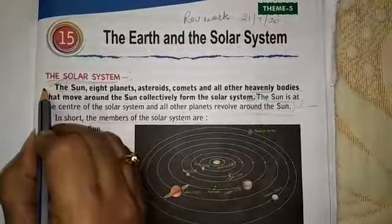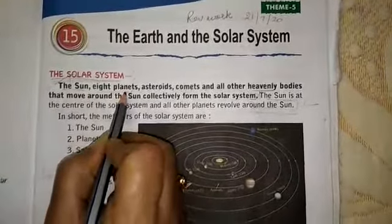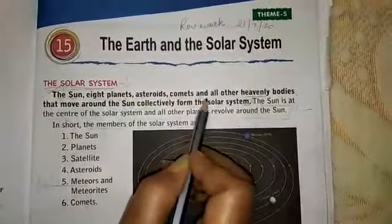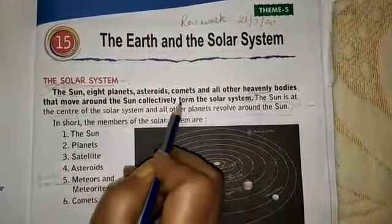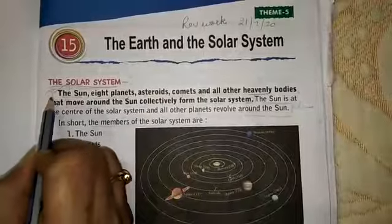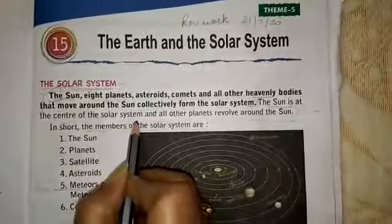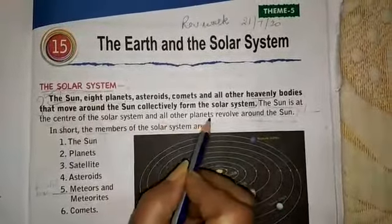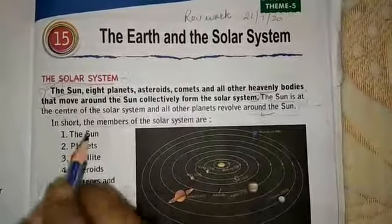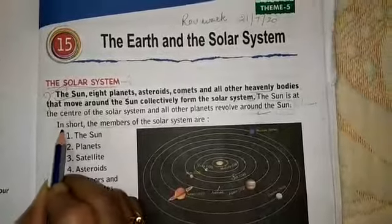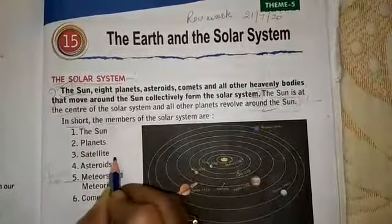The solar system: you will learn about the solar system. The Sun, eight planets, asteroids, comets, and all other heavenly bodies that move around the Sun collectively form the solar system. The Sun is at the center of the solar system and all other planets revolve around the Sun. From each topic you are going to learn four to five lines — learn this in short.